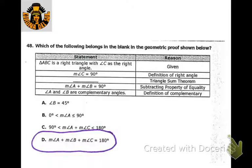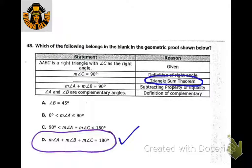The triangle sum theorem says that when you add up the three angles of a triangle, it equals 180. None of the other options really say anything about three angles adding up to 180.